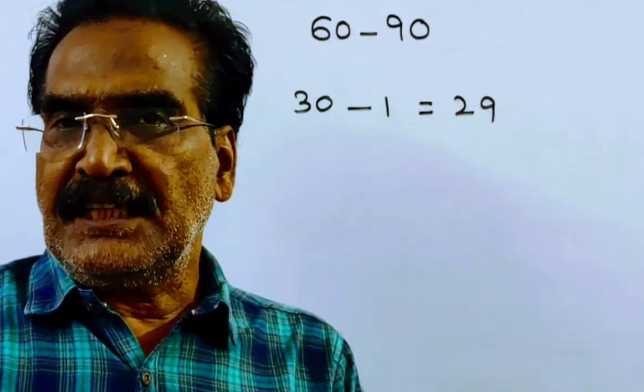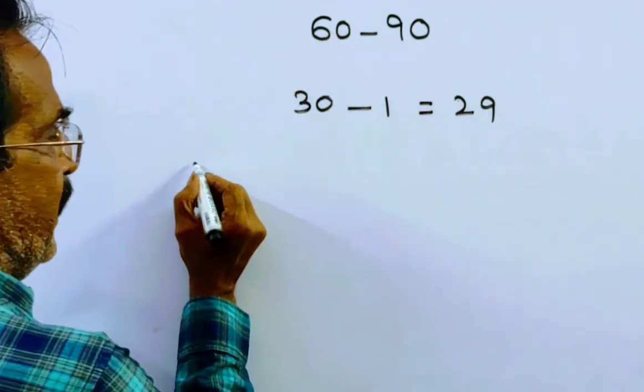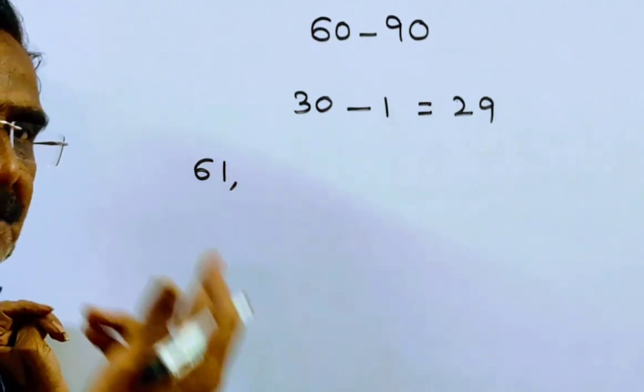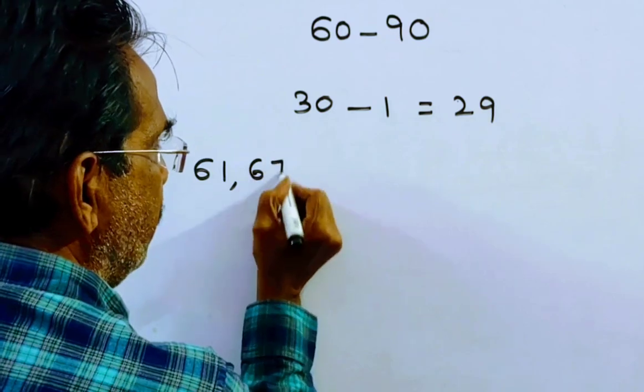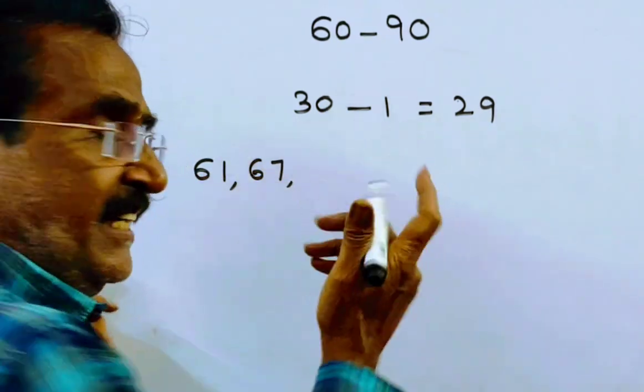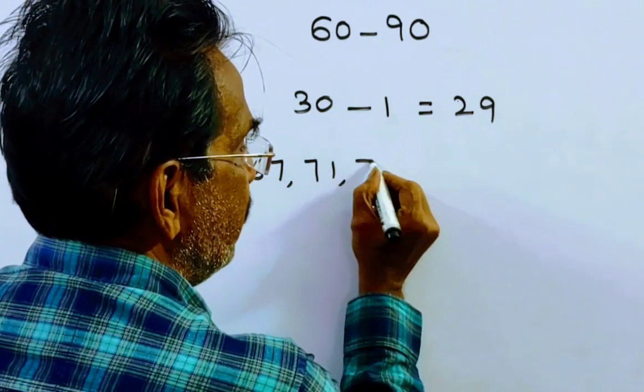Out of these 29 numbers, how many are prime numbers? After 60, 61 is prime number. Then 67 is the prime number, 71 is the prime number, and 73 is the prime number.